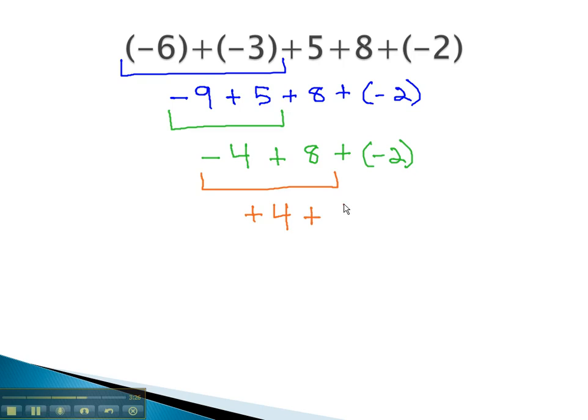The rest of the problem still reads + (-2). Finally, doing our last addition, we have a positive and negative number. The larger number keeps its sign, the positive, because 4 is larger than 2, and we subtract the numbers, 4 - 2, to get 2, for our final solution.